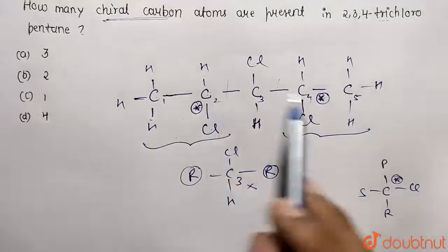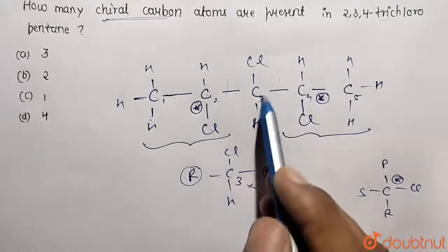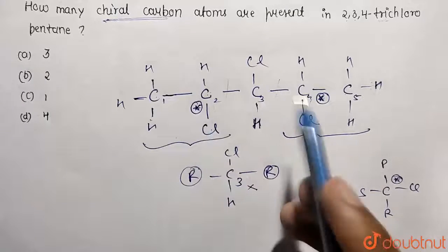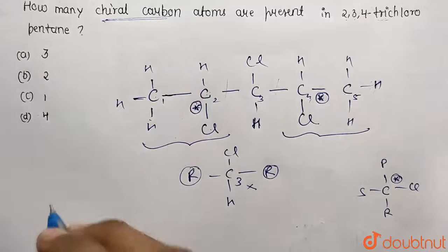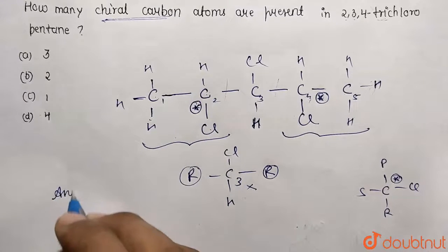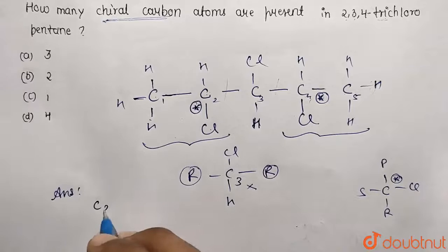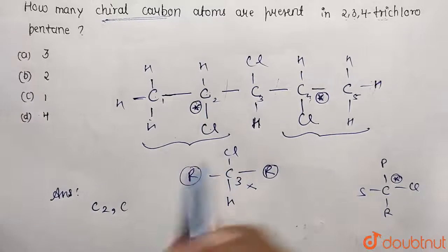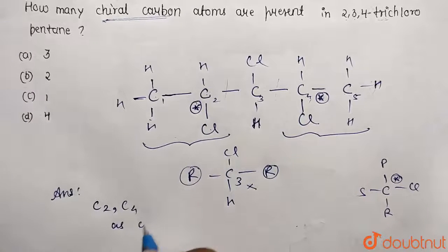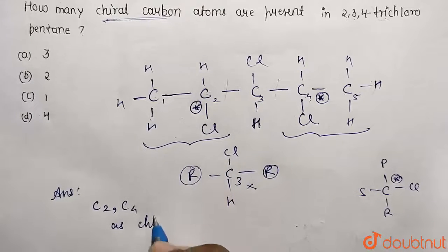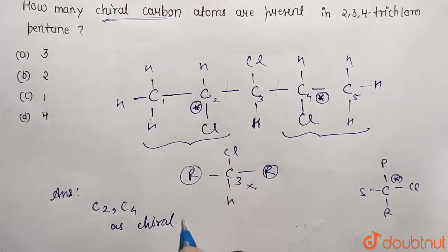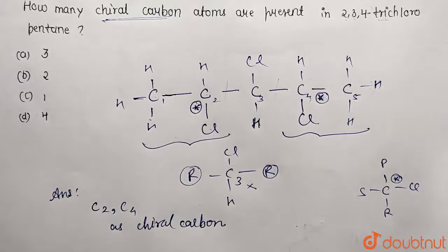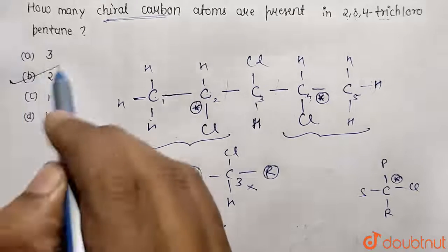So to conclude, we have only two chiral centers. Carbon 3 is not a chiral center because the groups attached to it are the same. The answer is carbon 2 and carbon 4 as the chiral carbons.